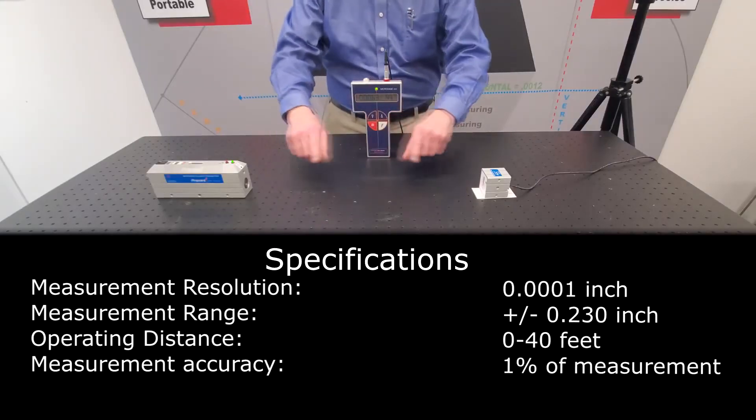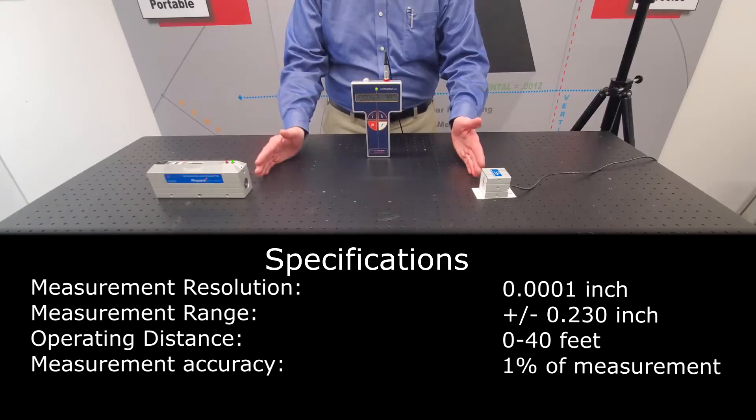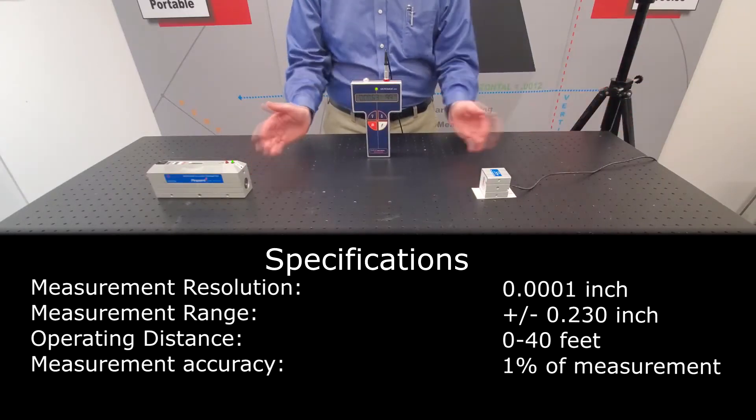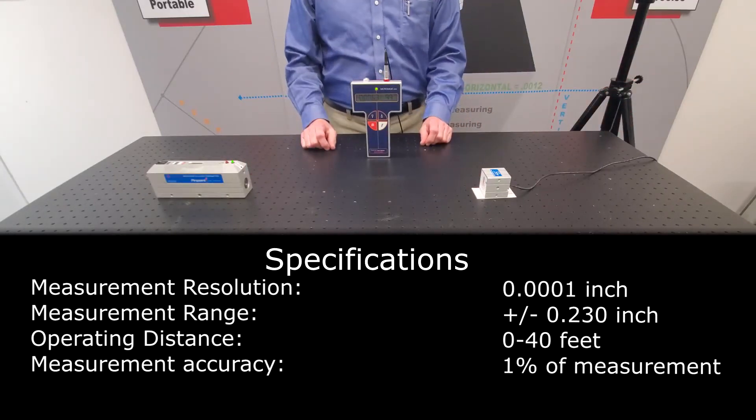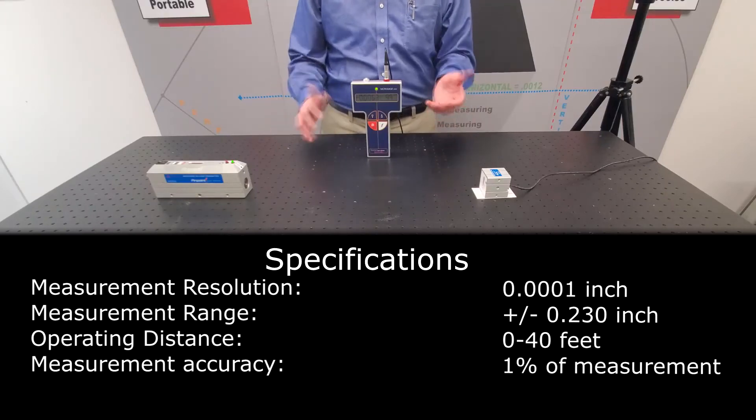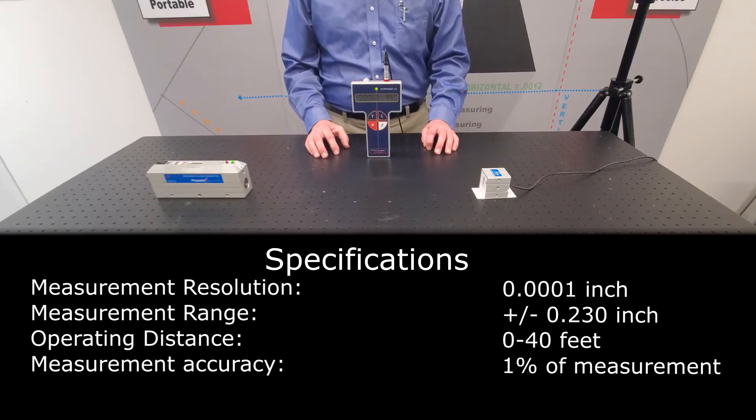This MicroGauge 2000 is very versatile. The receiver and laser can be used a few feet away up to about 40 feet, and by combining it with different Pinpoint accessories and attachments, you can make a variety of measurements on your plant floor in your application.